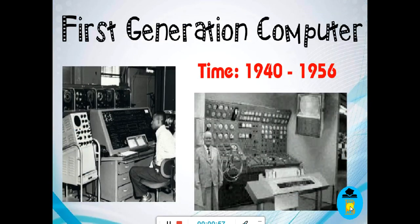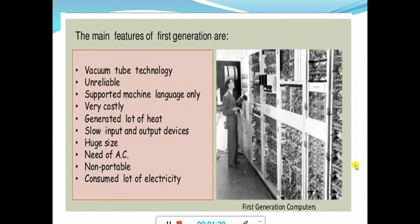Let us see the first generation computer. The first generation computer time period was 1940 to 1956. Whatever computers were invented in this time period are categorized as first generation computers. You can see this picture — these are the first generation computers, and you can see how much bigger in size they were. The features of the first generation: it used vacuum tube technology. Vacuum tubes were used for electric current to pass through the computer. It was unreliable, supported only machine language, very costly, slow in speed, very heavy and large in size, and it generated a lot of heat, meaning it consumed a lot of electricity.